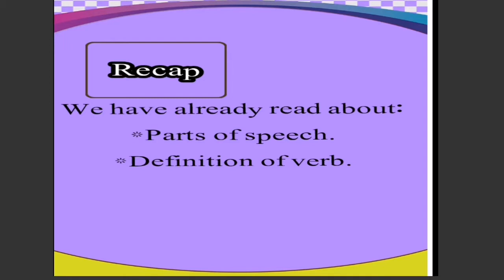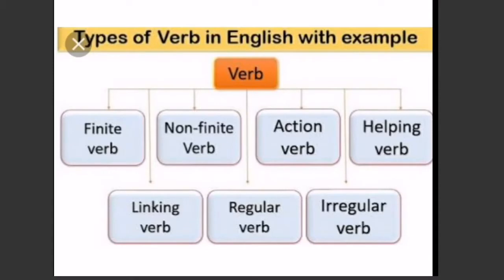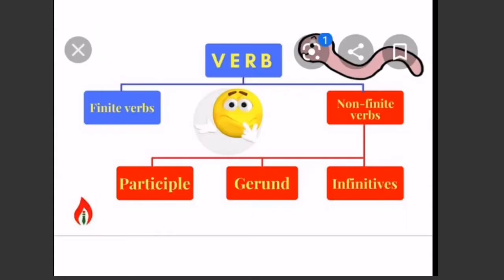Recap: we have already read about the parts of speech and the definition of verb. Do you know about the parts of speech and definition of verb, students? Types of verb in English include: finite verb, non-finite verb, action verb, helping verb, linking verb, regular verb, and irregular verb. Today we will read about gerund and infinitive verbs in non-finite verbs.